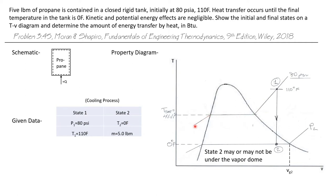And if I look in the saturation table for propane at 80 PSI, I'll find that its saturation temperature is 41.1 degrees Fahrenheit. So that's this horizontal line here. Now the temperature of state one is actually at 110 degrees Fahrenheit. So that is higher than the saturation temperature. So that means state one is a superheated vapor and I'm going to draw it up here.